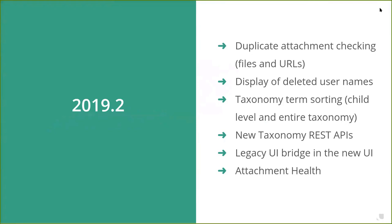The last noteworthy thing in 2019.2 was attachment health. There have been community concerns that files uploaded to Aquella are no longer there after a while, which is bad for a content management system. OpenAquella is powerful enough that scripting or REST APIs can make it look like attachments are missing, and in some cases that was the cause, but in others it was a bug in OpenAquella's code that needs to be resolved. These attachment health changes are for monitoring how files are handled so we can determine if it's a scripting error or something to adjust in the code. The attachment health changes were also backported to 2019.1.